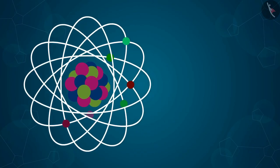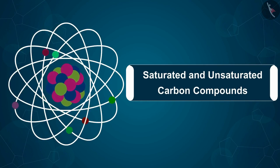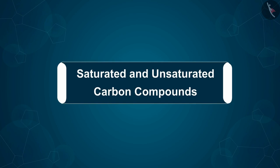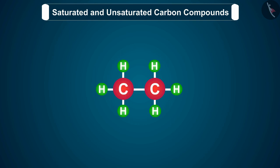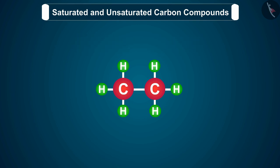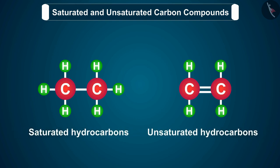Hello friends, welcome to this video session. The topic that we are going to cover in this session is saturated and unsaturated carbon compounds. Before we move ahead with our discussion, we should know that a compound made up of hydrogen and carbon only is called a hydrocarbon, and these hydrocarbons are of two types: saturated and unsaturated hydrocarbons.